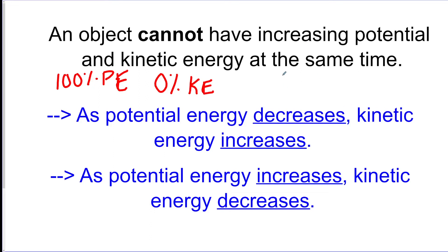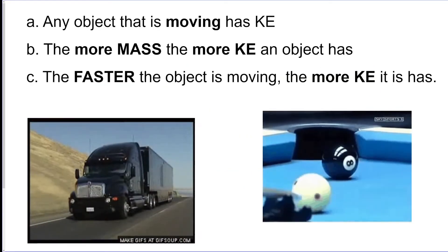If there was 100% kinetic energy, then that object has to have 0% potential energy. You could also have a situation where it's 50/50, 25/75, whatever it is, it always has to equal 100%. Any object that's moving has kinetic energy.